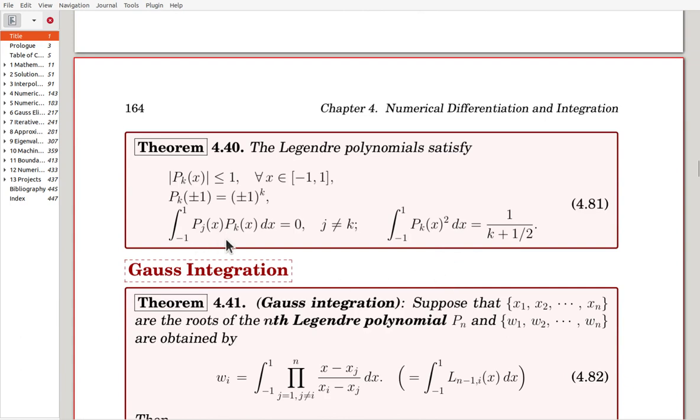Now, Pj·Pk product has integral 0, which means that Pj, Pk, when they are different, they are orthogonal. And Pk squared has integral value 1 over k plus half.